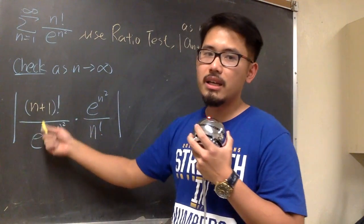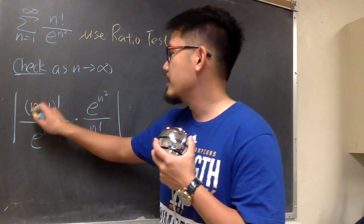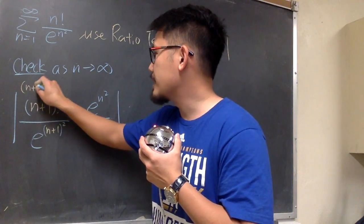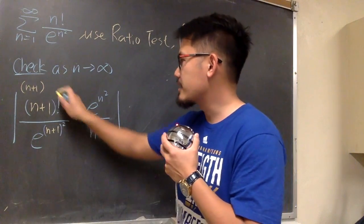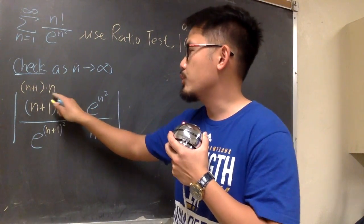Look at this part, (n+1) factorial, break this apart. This is going to be (n+1), we put down whatever we have in the parenthesis first. And then the next factor is going to be n, we go 1 less.